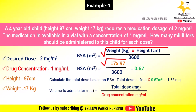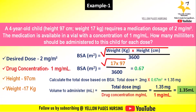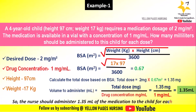The final step is calculating the volume to administer. The formula is: total dose in milligrams divided by drug concentration in milligrams per ml, which equals 1.35 divided by 1, giving the answer 1.35 ml. So the nurse should administer 1.35 ml of the medication to the child for each dose.